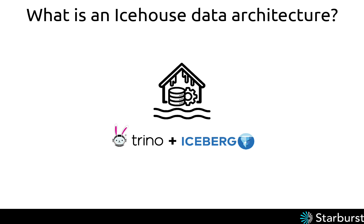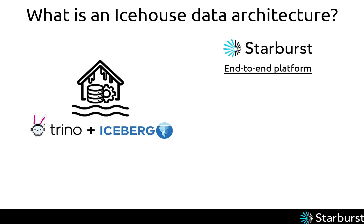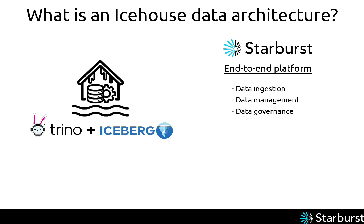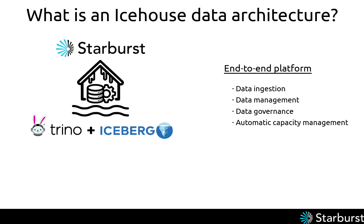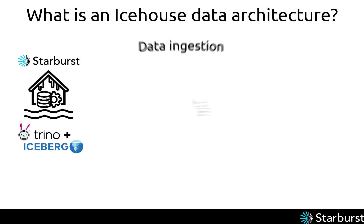How do you implement a data ice house architecture? Although there are many ways to use Trino and Iceberg together, the very best way is using Starburst Galaxy. Galaxy provides a complete end-to-end platform to manage the ice house, moving from data ingestion to data management to data governance, including automatic capacity management and scaling. Just as Iceberg was built with Trino in mind, Starburst Galaxy was built to take advantage of the ice house architecture.